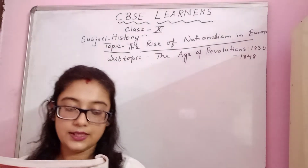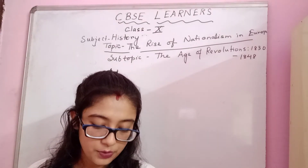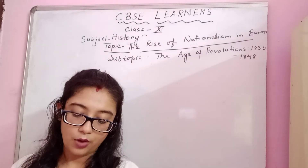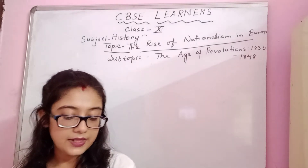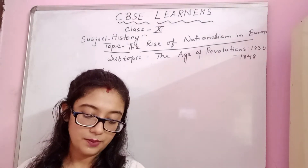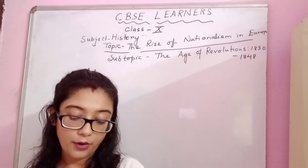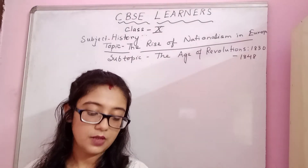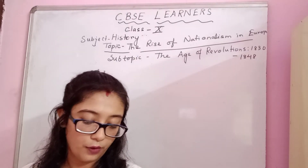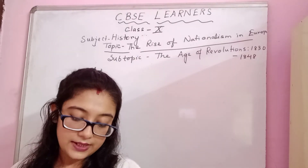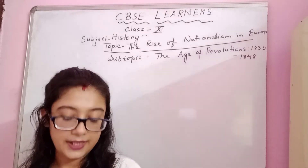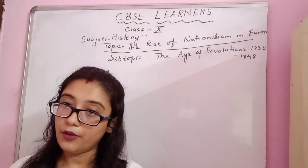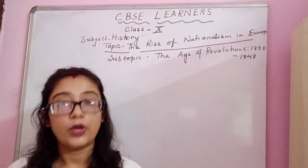As conservative regimes tried to consolidate their power, liberalism and nationalism came to be increasingly associated with revolution in many regions of Europe, such as the Italian and German states.